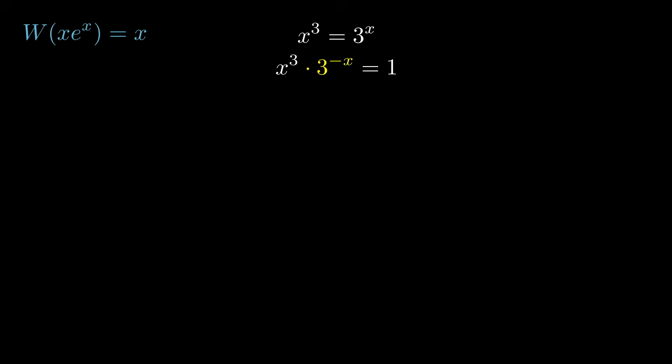Let's divide both sides by 3 to the x, which we can write like this using properties of exponents. Now, we sort of have something that starts to look like xe to the x. That's what we're going to need if we're going to use the Lambert W function. But things don't match up here. And we also don't have an e. So let's put one there.